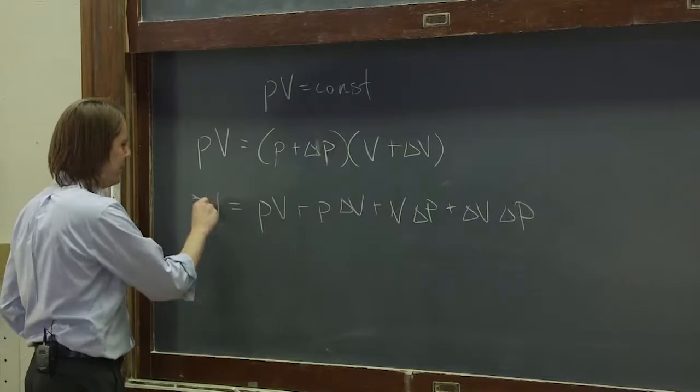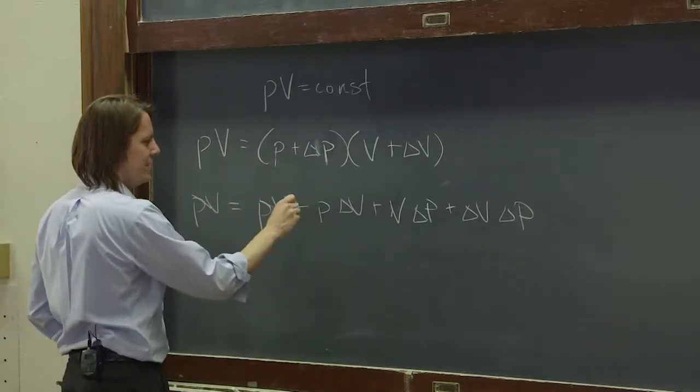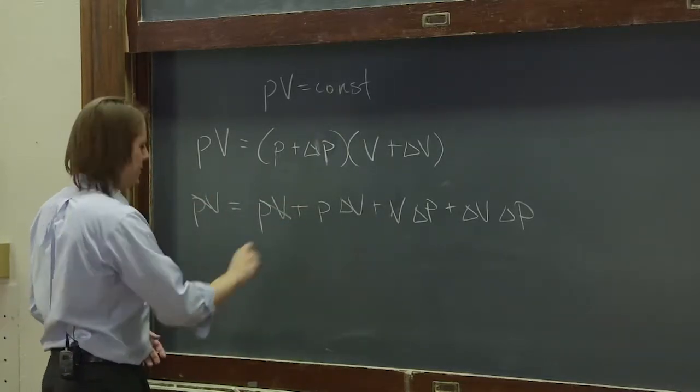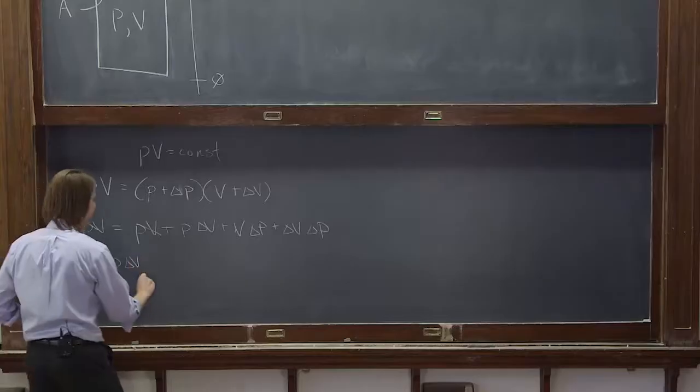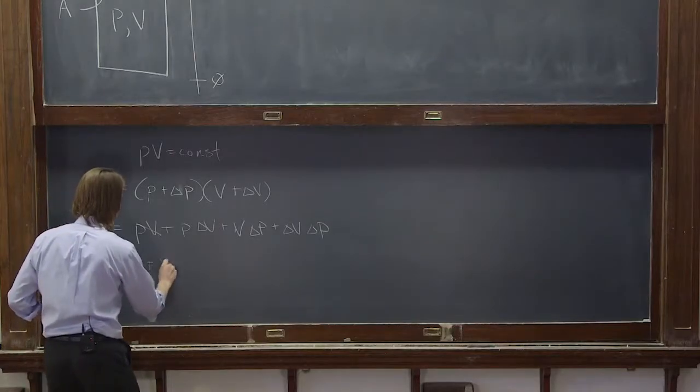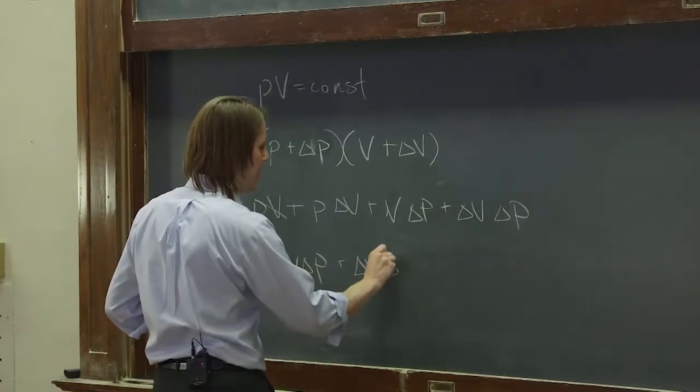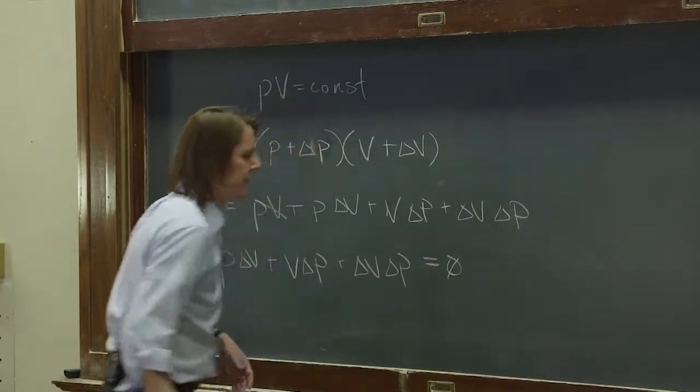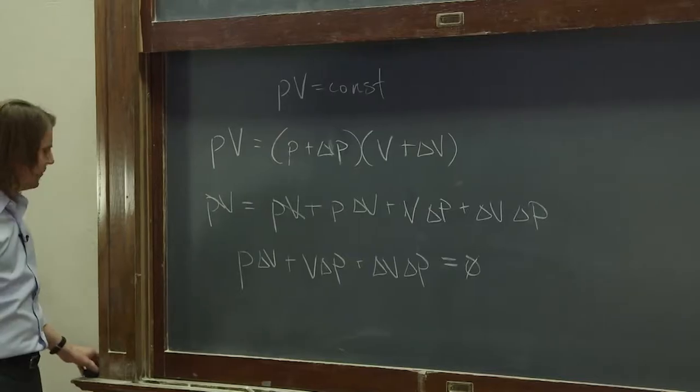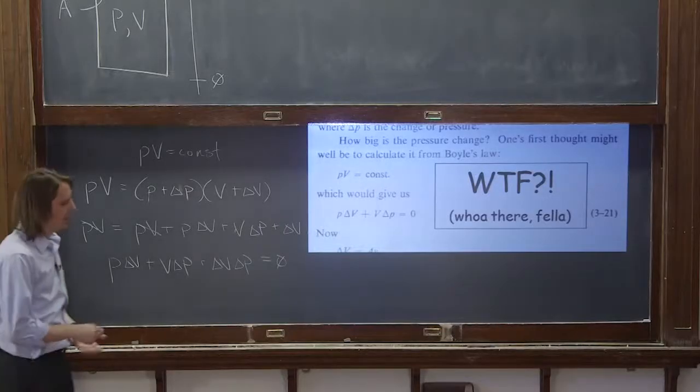If you cancel terms, you see that side is zero, so you get P delta V plus V delta P plus delta V delta P equals zero. That would be the full description.